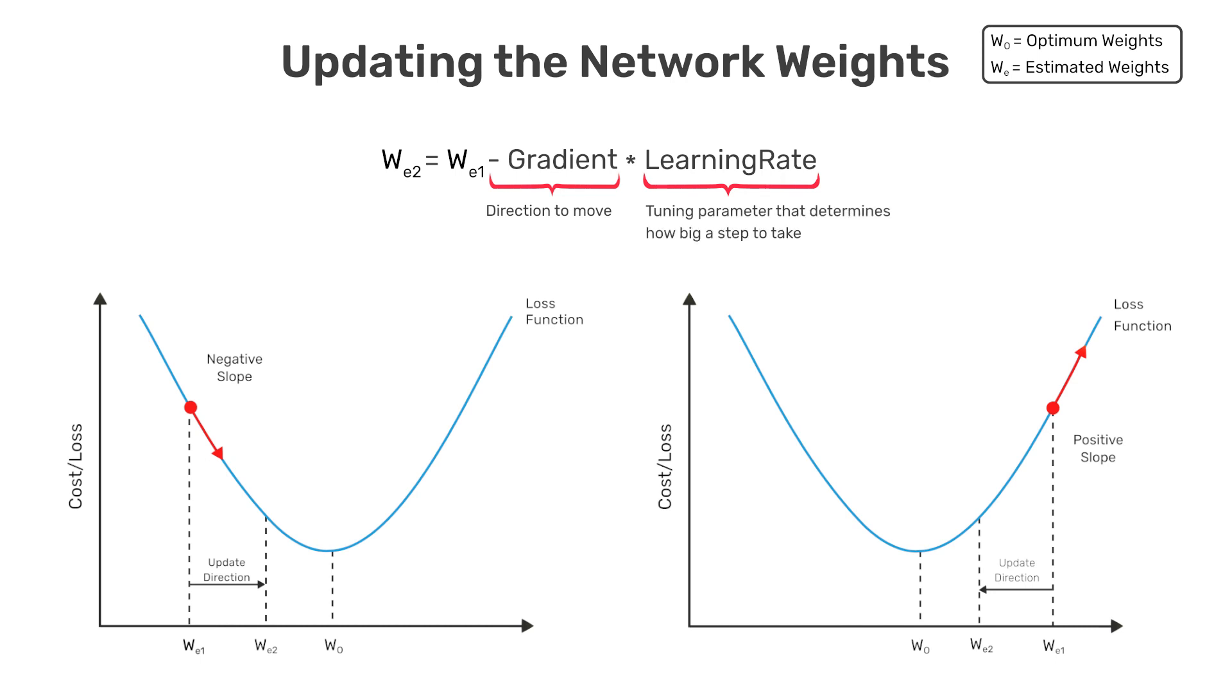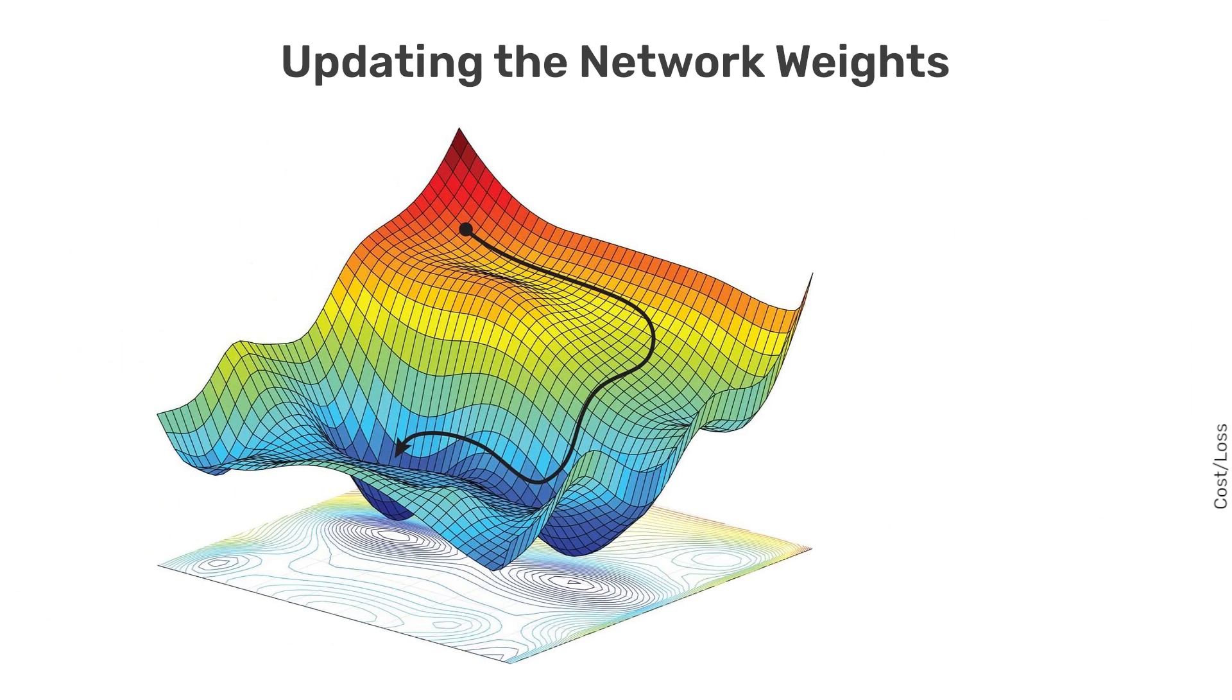The learning rate is something that we get to specify and is not something that is learned by the network. Parameters like this are often called hyperparameters to distinguish them from trainable parameters, such as the network weights.